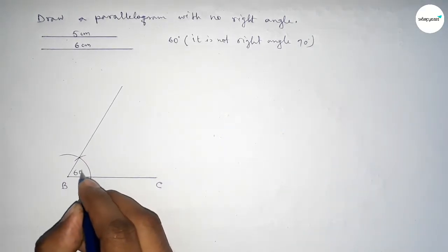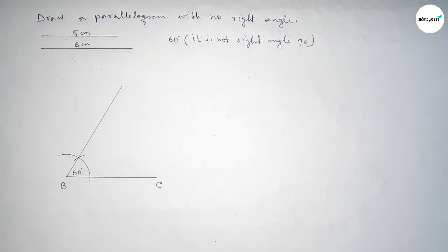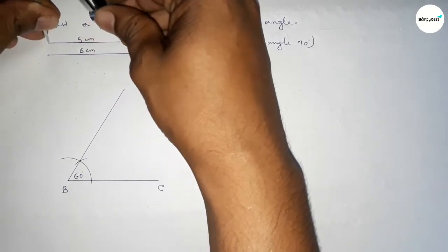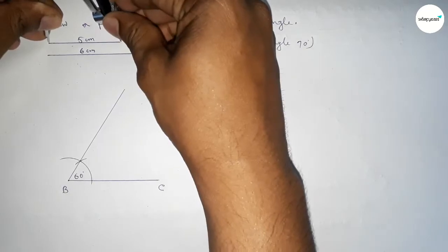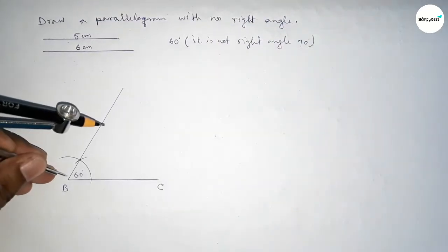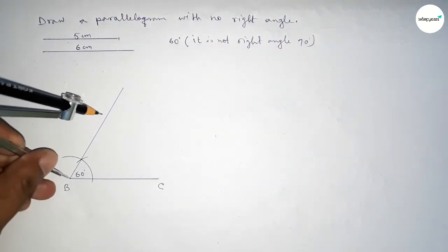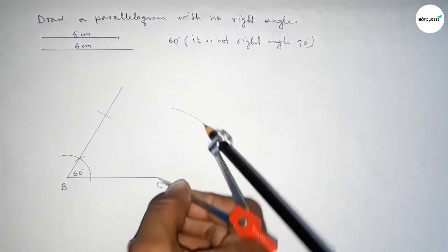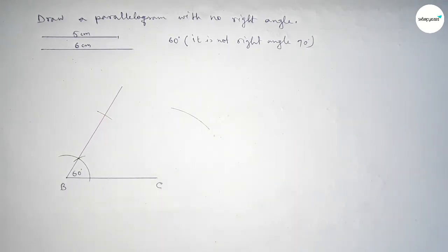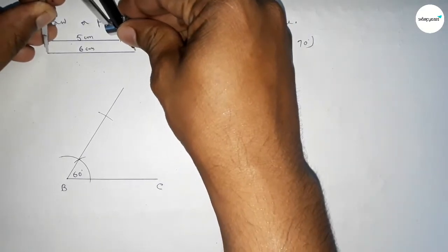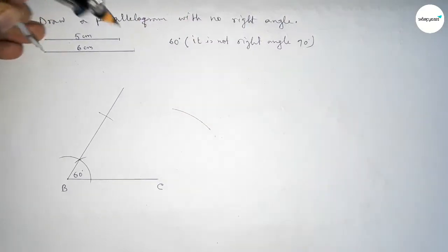Now taking the length 5 centimeters using the compass. Putting the compass on point B and cutting here with the same length, putting the compass here and drawing an arc, then drawing another arc. Now taking the length 6 centimeters.